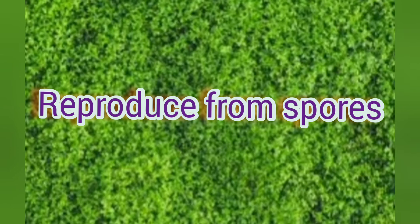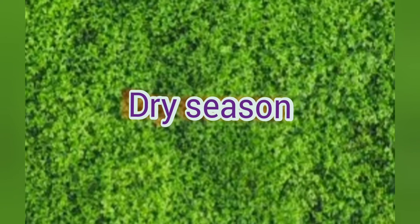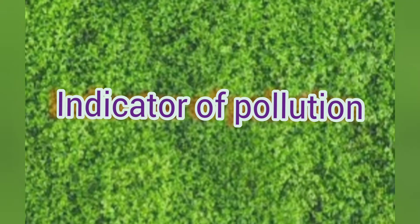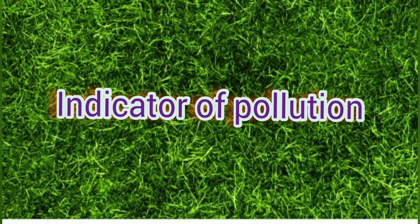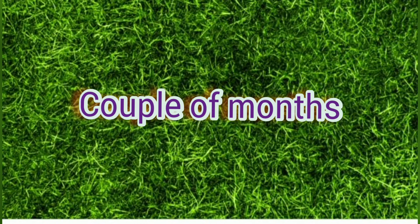Mosses can stop their metabolism almost completely during the dry season or when water is not available. Mosses are indicators of pollution because they can grow only in clean environments where the air and water sources are not polluted. The lifespan of mosses depends on its species and the pollution index of its environment. Some species can live for a couple of months while others can survive for more than 10 years.